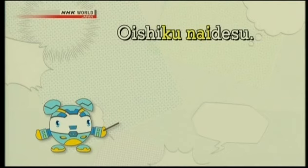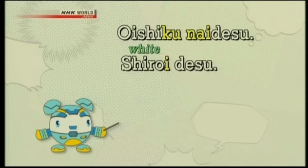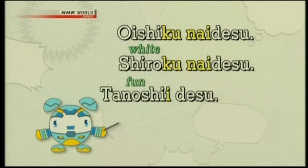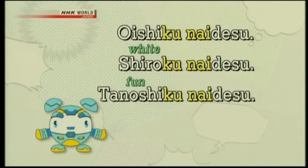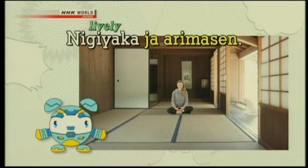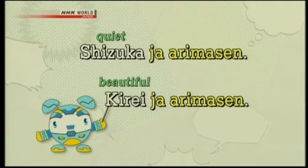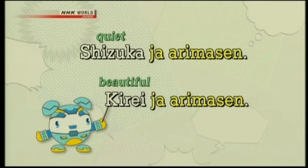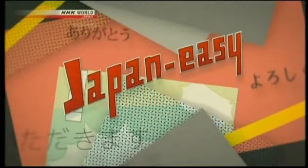Oishii desu becomes oishiku nai desu. Shiroi desu becomes shirokaku nai desu. Tanoshii desu becomes tanoshiku nai desu. It's easy, right? Do you remember there was another way to express the negative form of adjectives? When you're meditating at a temple in Kyoto, it is not lively — にぎやかじゃありません. Some other examples: しずかじゃありません, きれいじゃありません. So just adding じゃありません is another way of expressing the negative form.